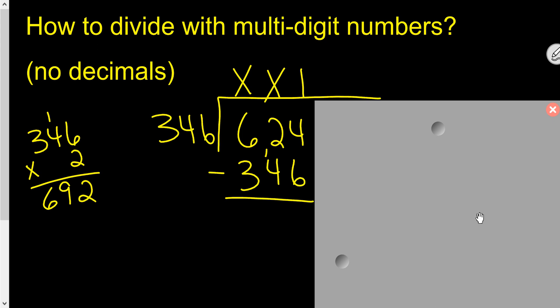So 1 times, and this is what you do here, 346 times 1 is 346. And now we subtract it,